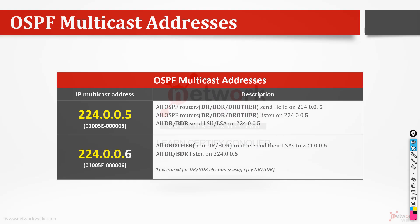How many multicast addresses are used by OSPF? OSPF actually uses two multicast addresses. One is 224.0.0.5 and the second one is 224.0.0.6. All routing protocols use multicast addresses except RIP, which uses broadcast — it's an old type of routing protocol. So OSPF uses .5 and .6, but why two multicast addresses?